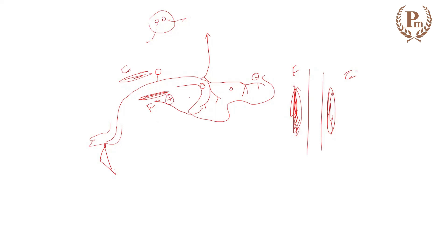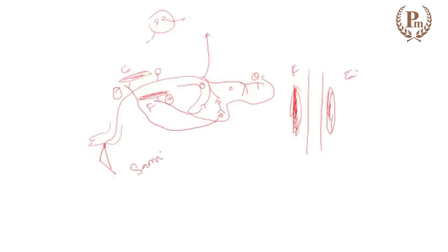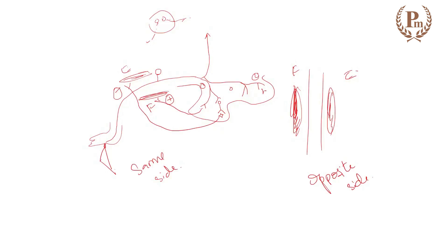From the same limb, there should be flexion — the flexor should be contracted and the extensor should be relaxed. And then, how about the extensors on the same side? The extensor should be inhibited. And for the opposite limb, there should be the opposite — vice-versa — the limb should be extended. For inhibition, what do I need? The inhibitory interneuron.